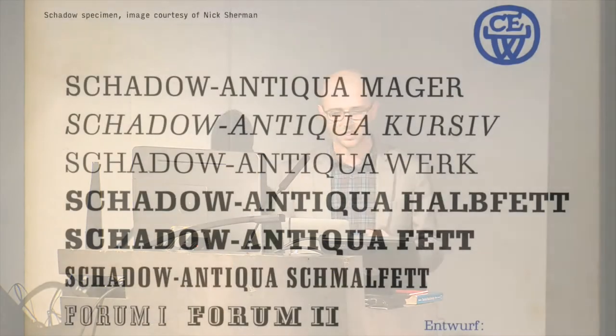Your typical 20th century family has a grab bag of styles, each filling a different role: your text, your secondary text, your italic, your subhead, your titling. These might have all been produced at separate times — there isn't a cohesive vision. Shadow, for example, was produced over the course of 14 years.